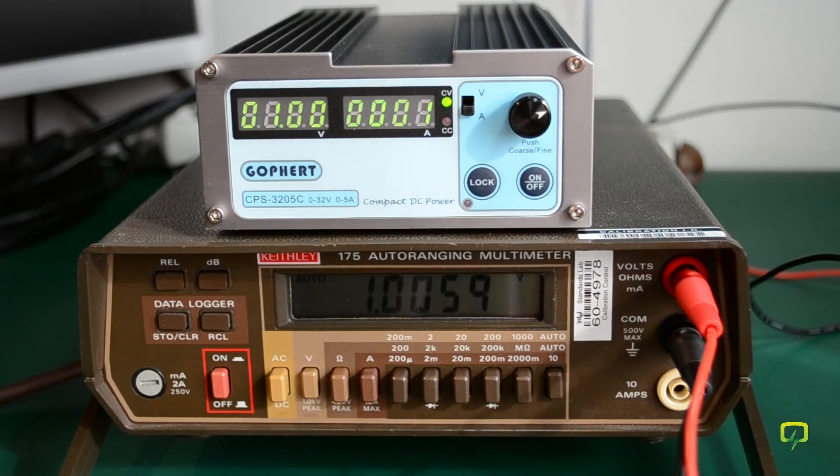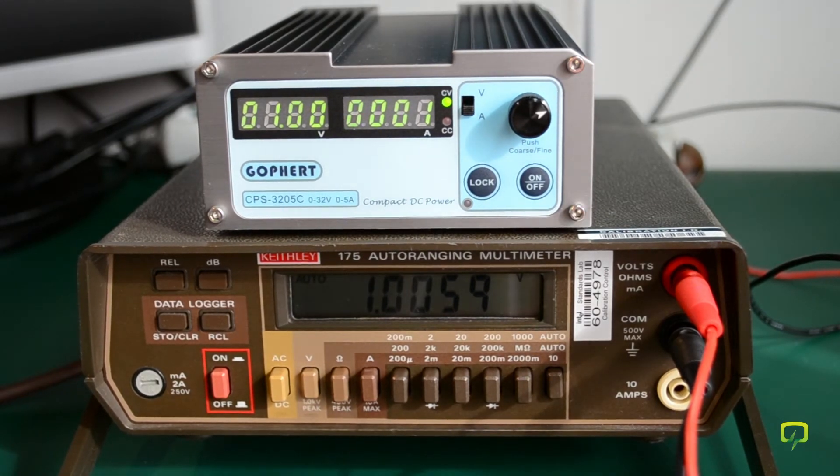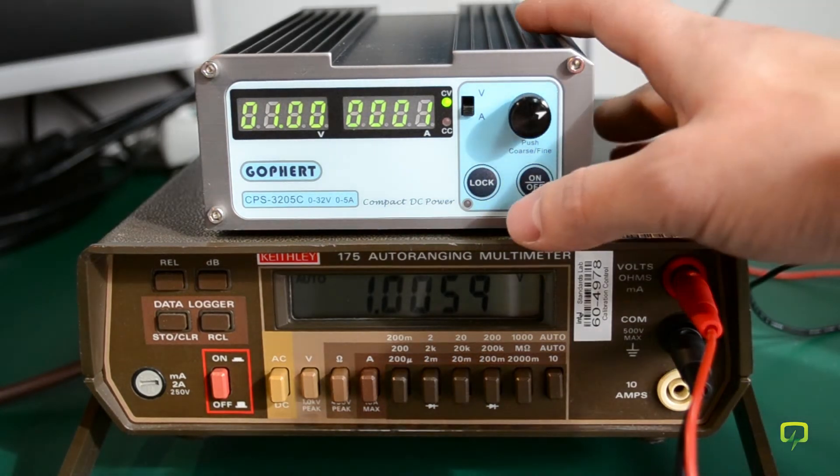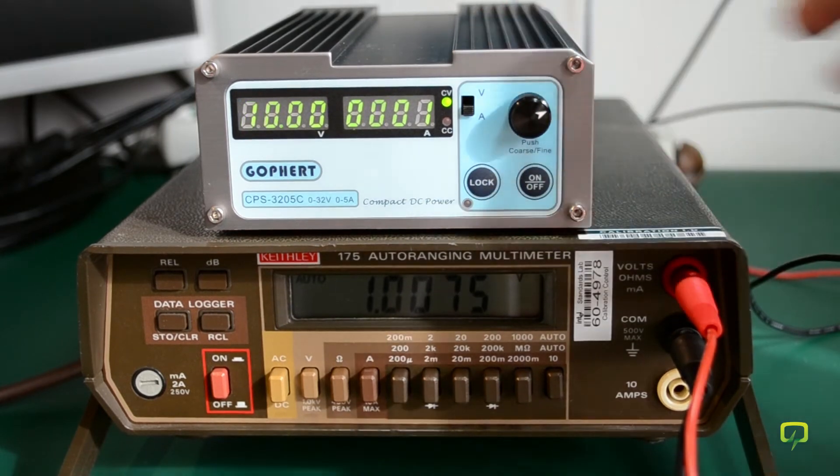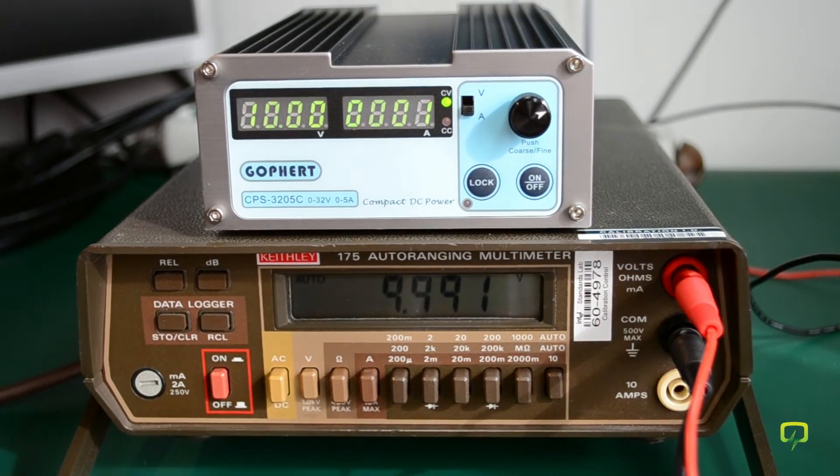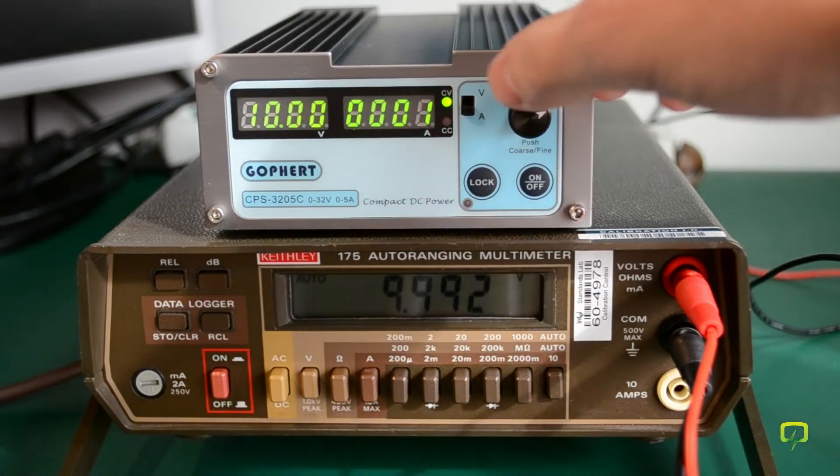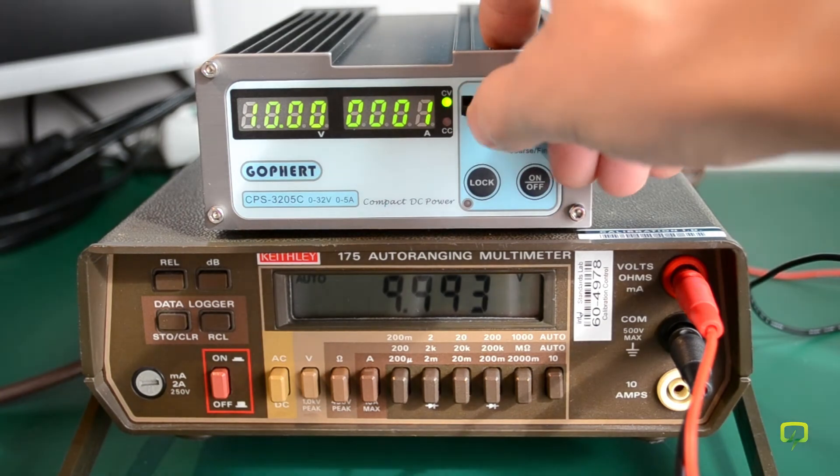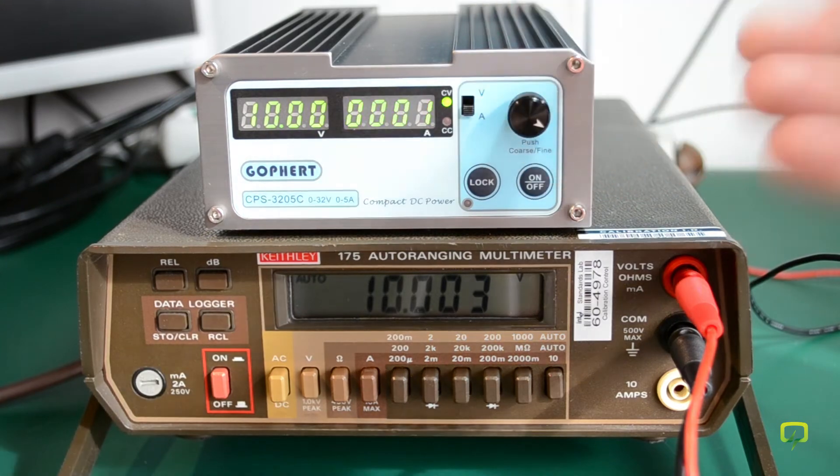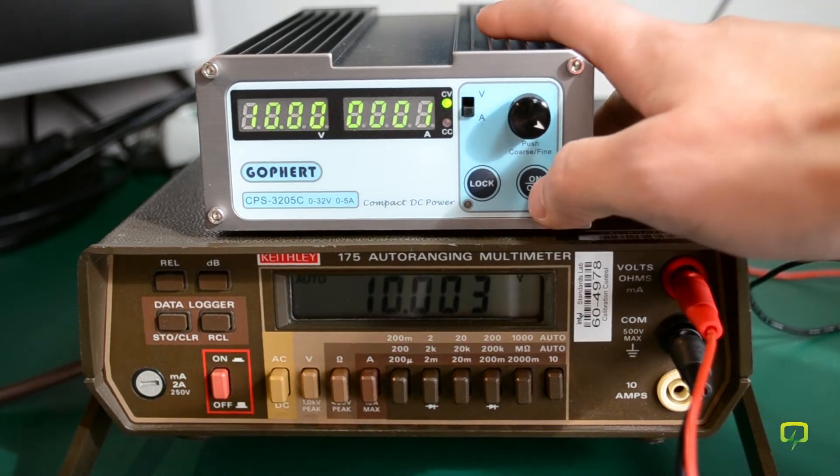Next, if you're happy with the measurement, you press the on/off button to calibrate the output voltage for different ranges. So I press the on/off button once, and it went to the 10 volt mark. Now you have to calibrate it for 10.00 volts. So let me try to adjust that. Okay, I have 10.00 volts. Now you press the on/off button again.